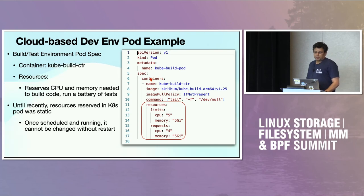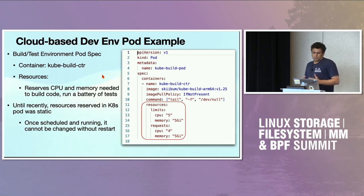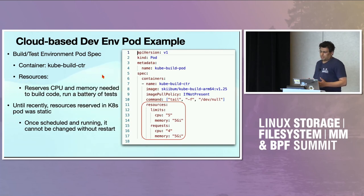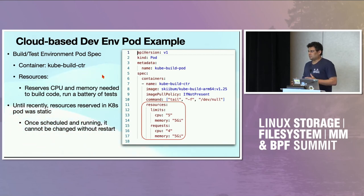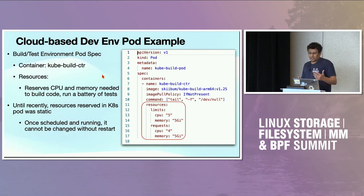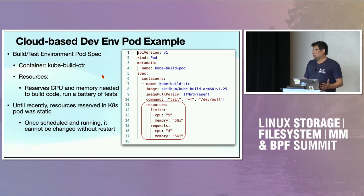Once it's up and running, up until very recently, Kubernetes did not have the capability to modify the resources you requested at the time of pod creation. If the pod is running and no build or test is running, that capacity is wasted — reserved for you and remains wasted, which is a waste of resources and money. What's worse, if you start running a test and realize five gig is not enough, you have to kill the whole thing, reschedule the pod with six gig or more, and run it again — wasting time and money.